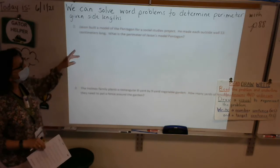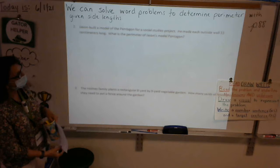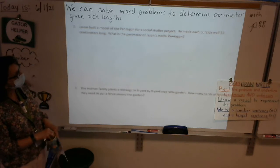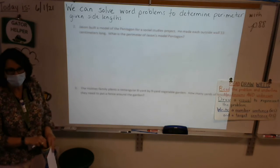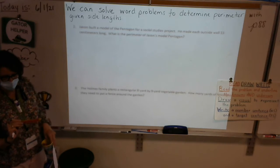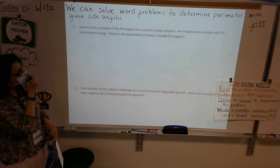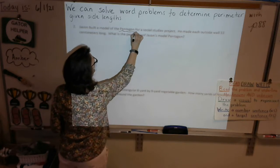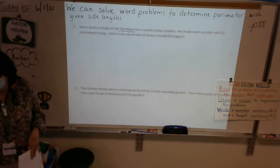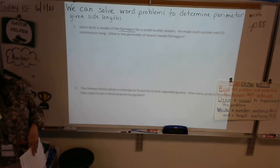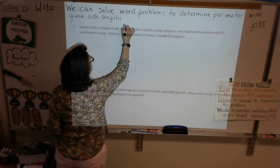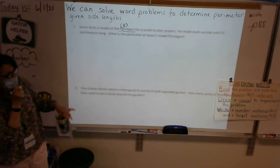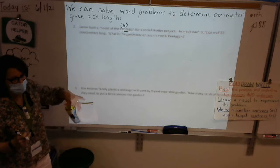Okay, number two says Jason built a model of the Pentagon for a social studies project. He made each outside wall 33 centimeters long. What is the perimeter of Jason's model Pentagon? So what are some important things that we need to underline in here? Kalia, what's one important thing? Okay, Pentagon. And what does Pentagon mean? I know it's a shape. It's a polygon. Five. Yeah, it means five sides. So I'm going to put five right above the pen because now I know it means five sides. So please do that to remind yourself, Kayden, that Pentagon means five sides. Nice job.